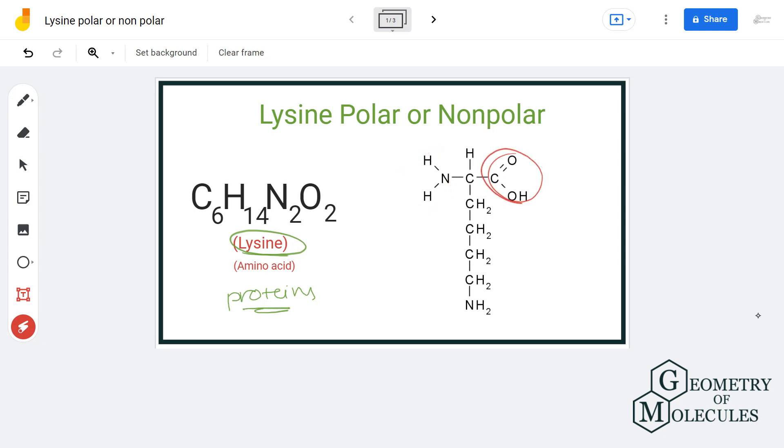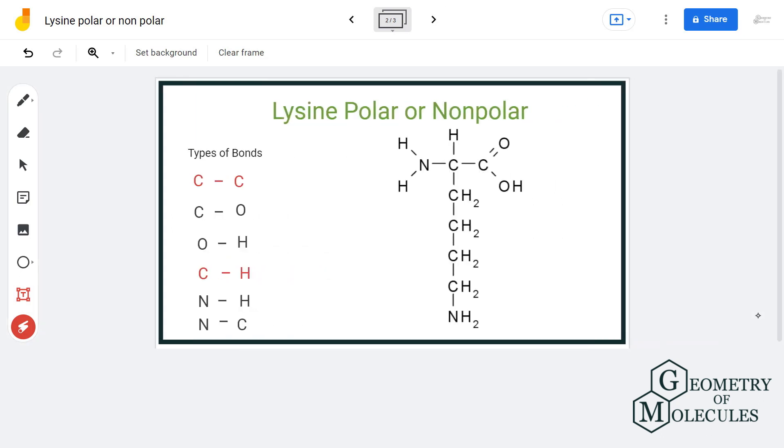As we can see, the structure has six types of bonds present. The electronegativity difference of C-C and C-H bonds is very small, so they are considered non-polar.